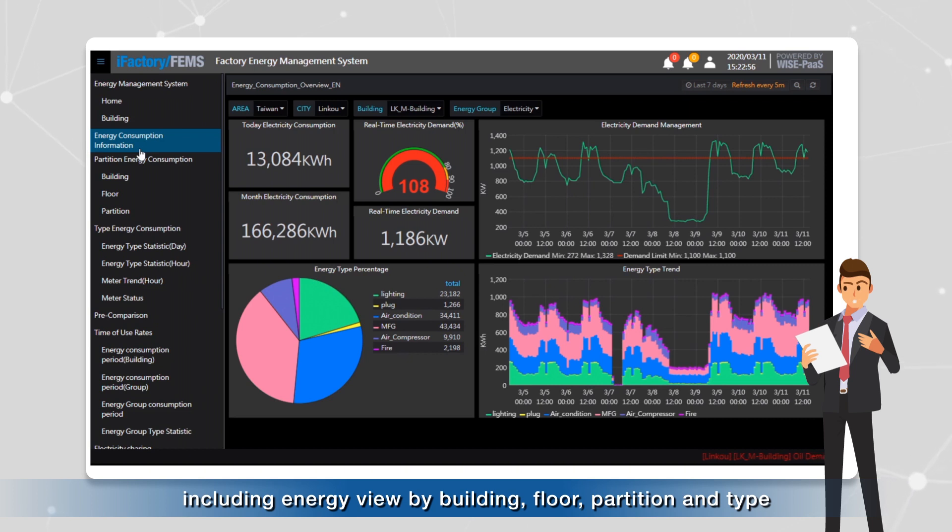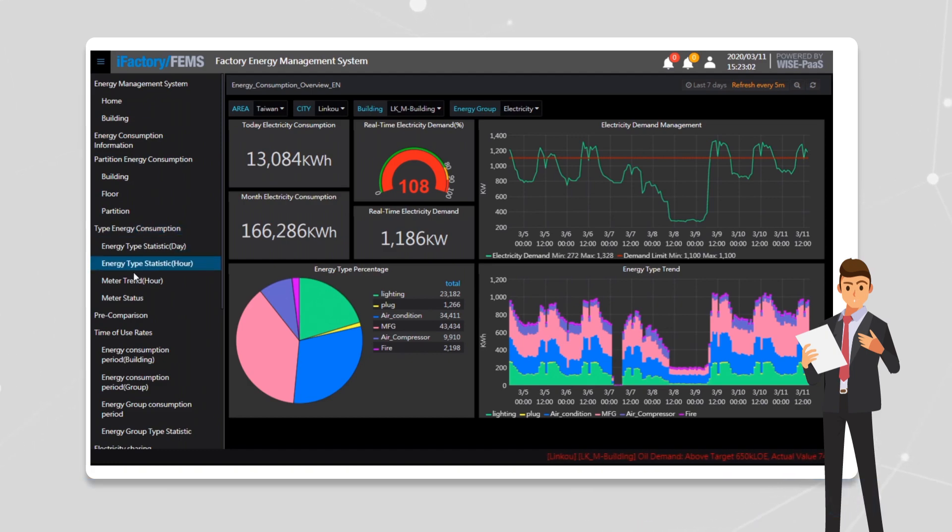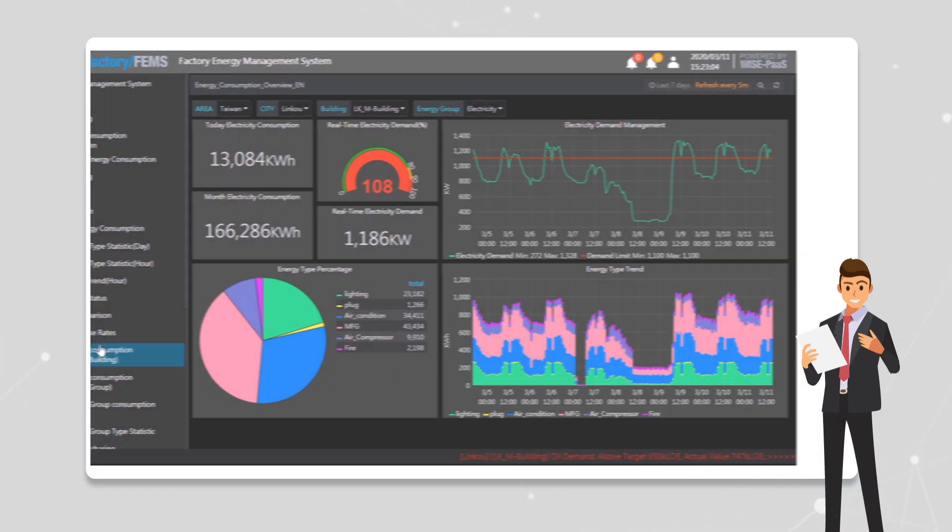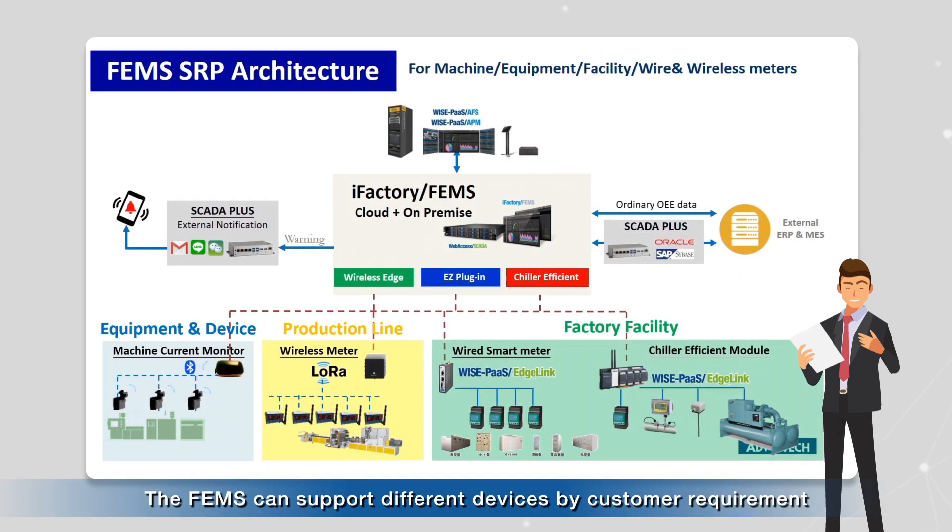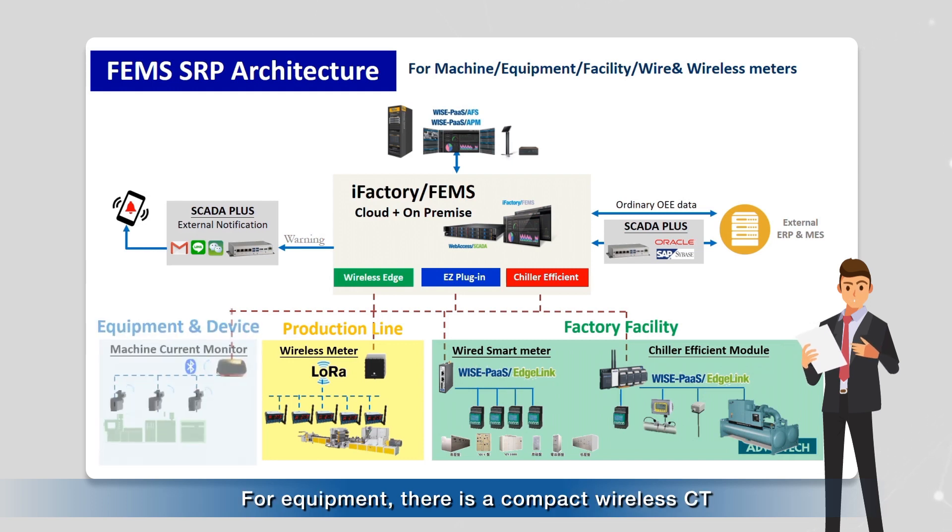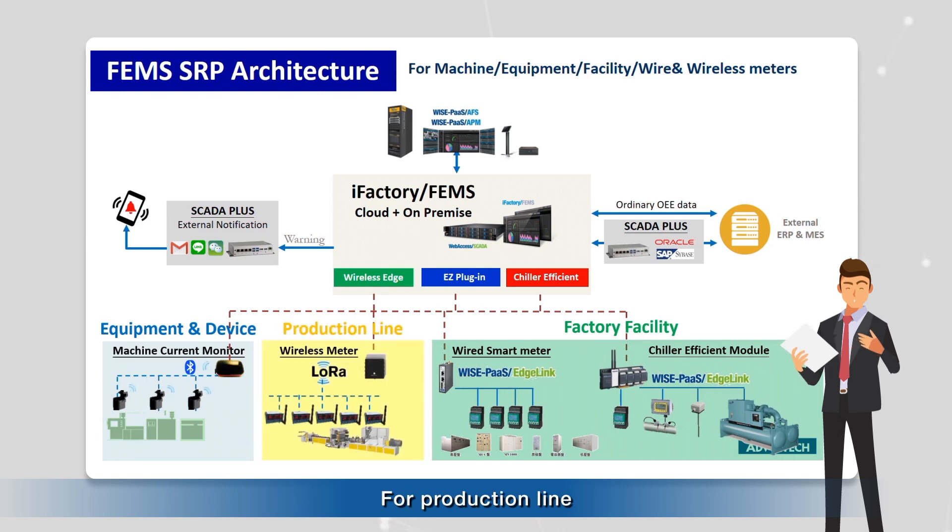This includes energy view by building, floor, partition, and type. FEMS can support different devices by customer requirement. For equipment, there's a compact wireless CT. For production lines, the LoRa wireless meter might be an ideal choice. For large facilities, you can use a field controller to connect machines like chillers.